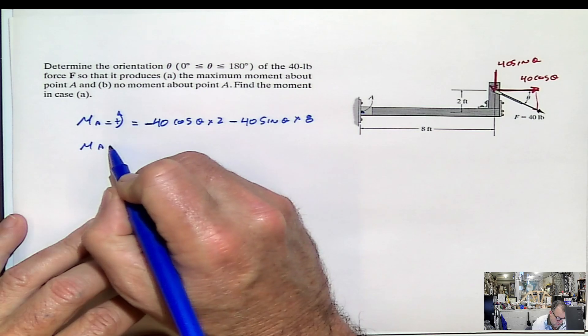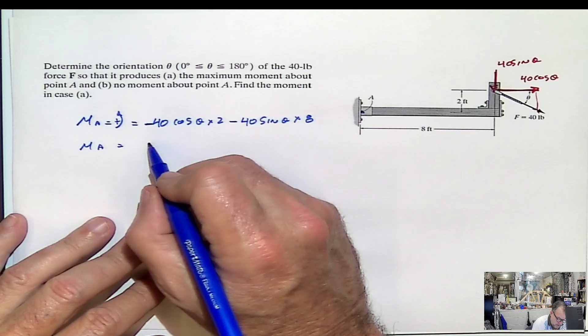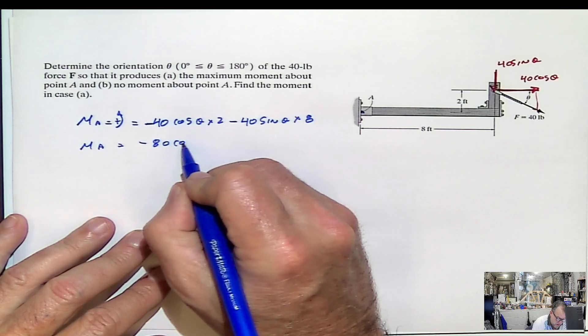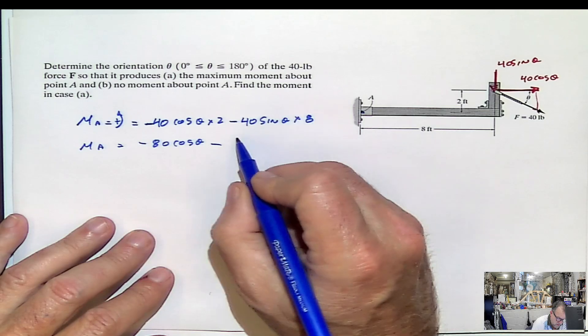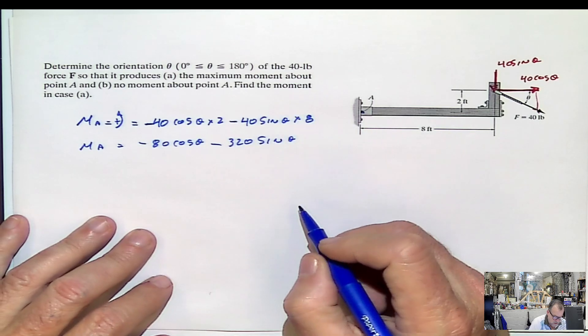Moment at A, assuming counterclockwise as positive, will be negative 80 cosine of the angle minus 320 sine of the angle.